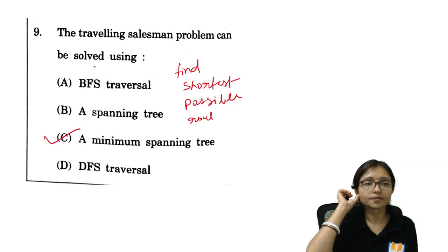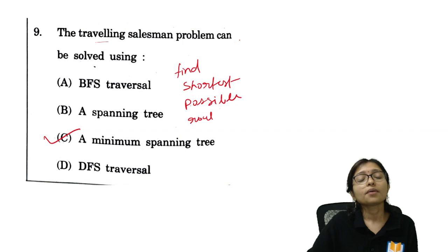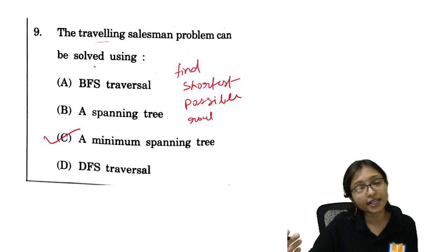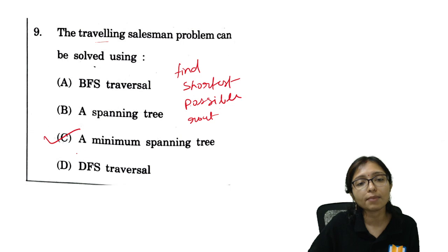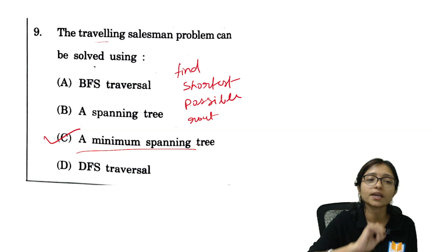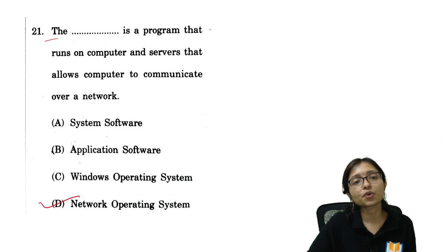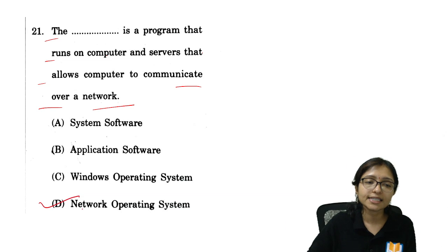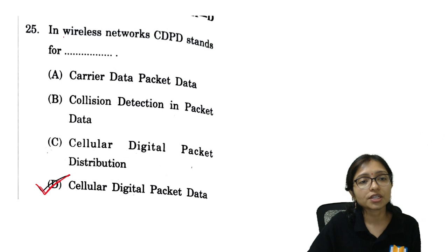Next: the Traveling Salesman Problem involves finding the shortest possible route, which can be solved using a minimum spanning tree. So the answer is minimum spanning tree. Next: the program that allows a computer to communicate over a network is the network operating system — a simple question.